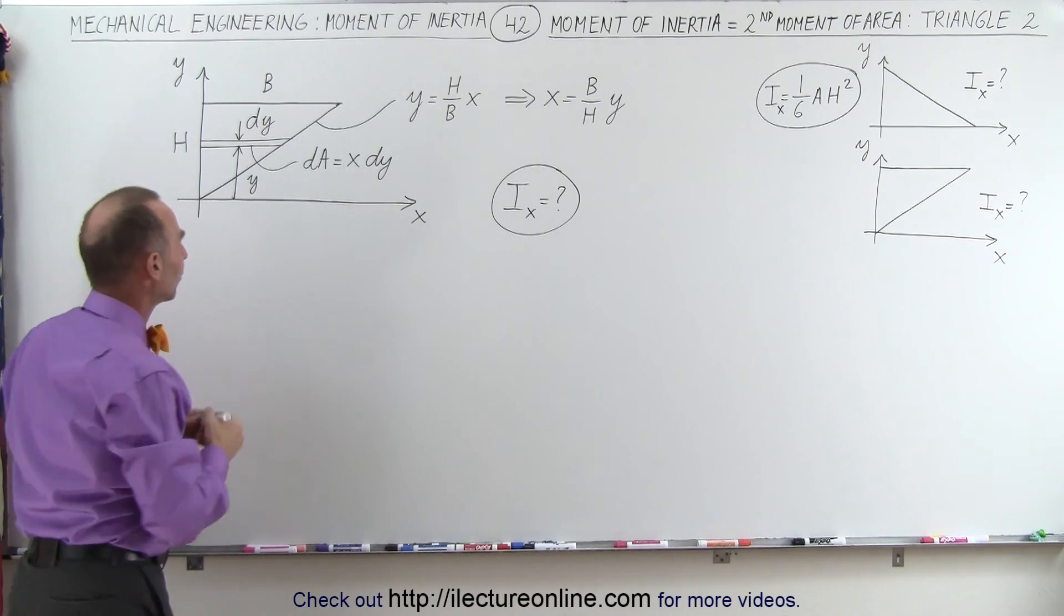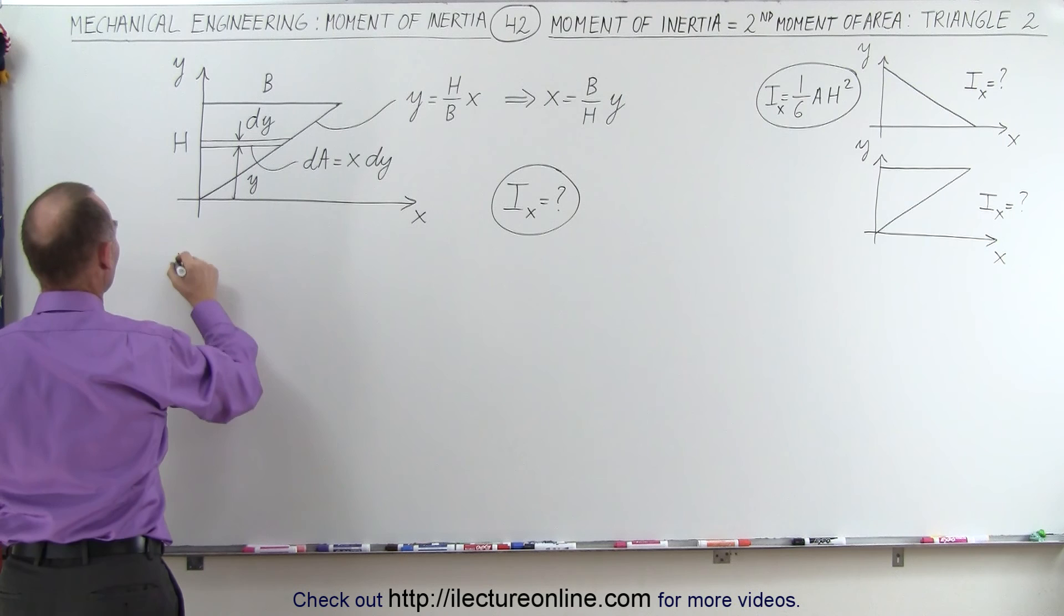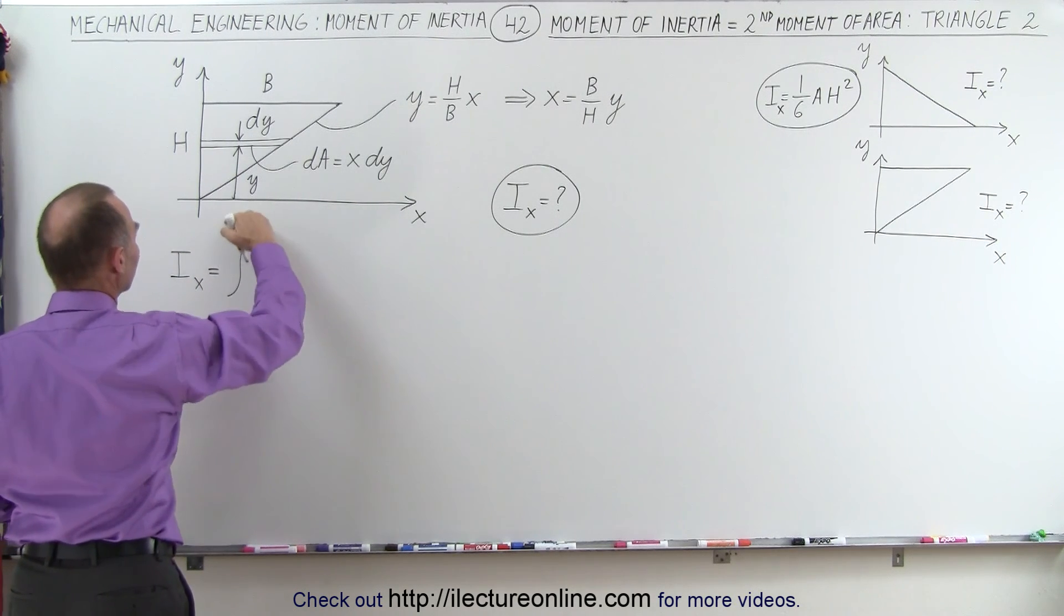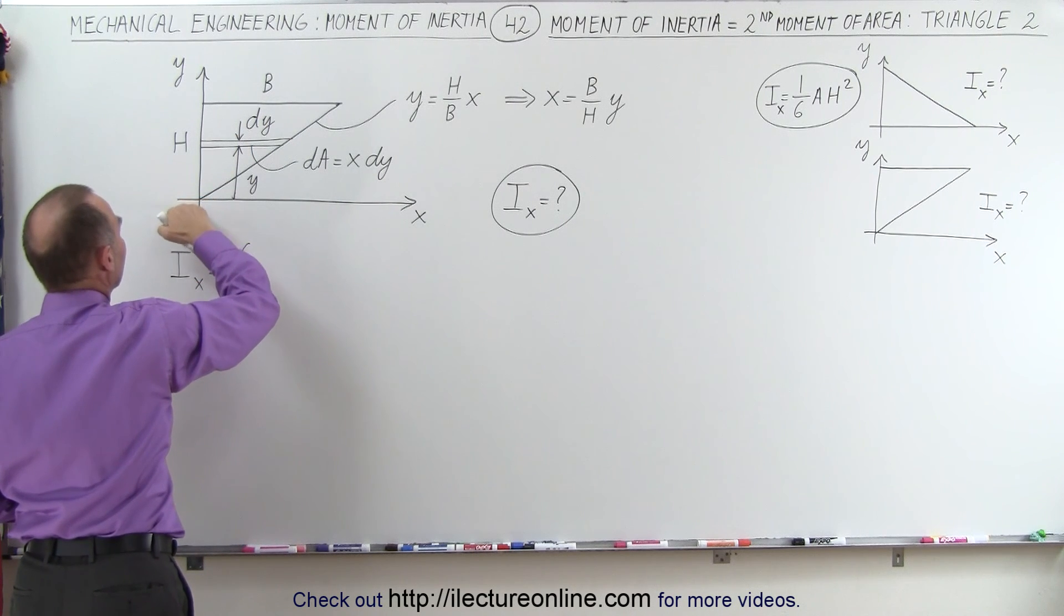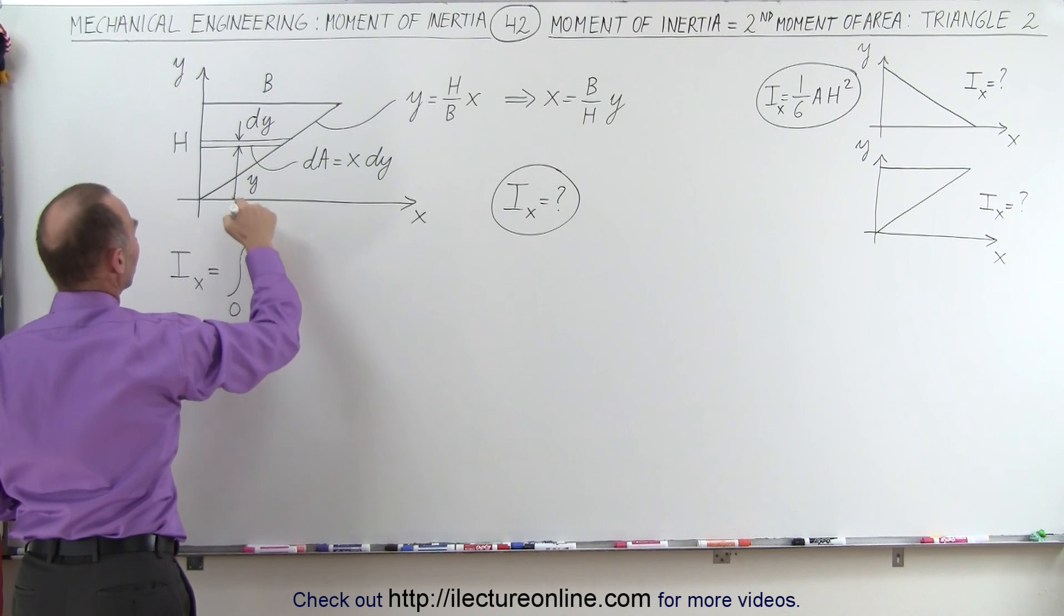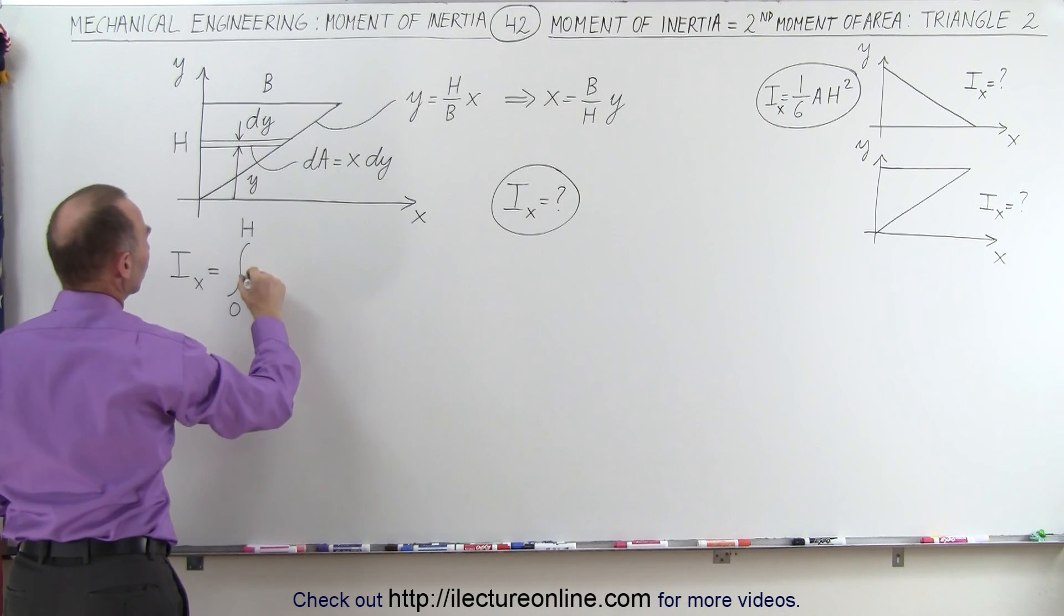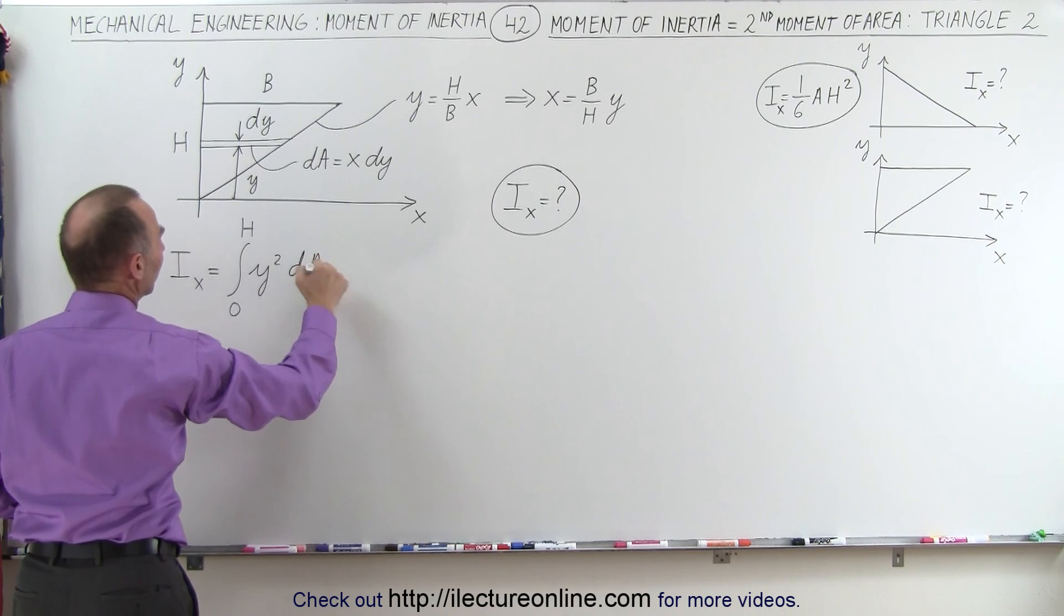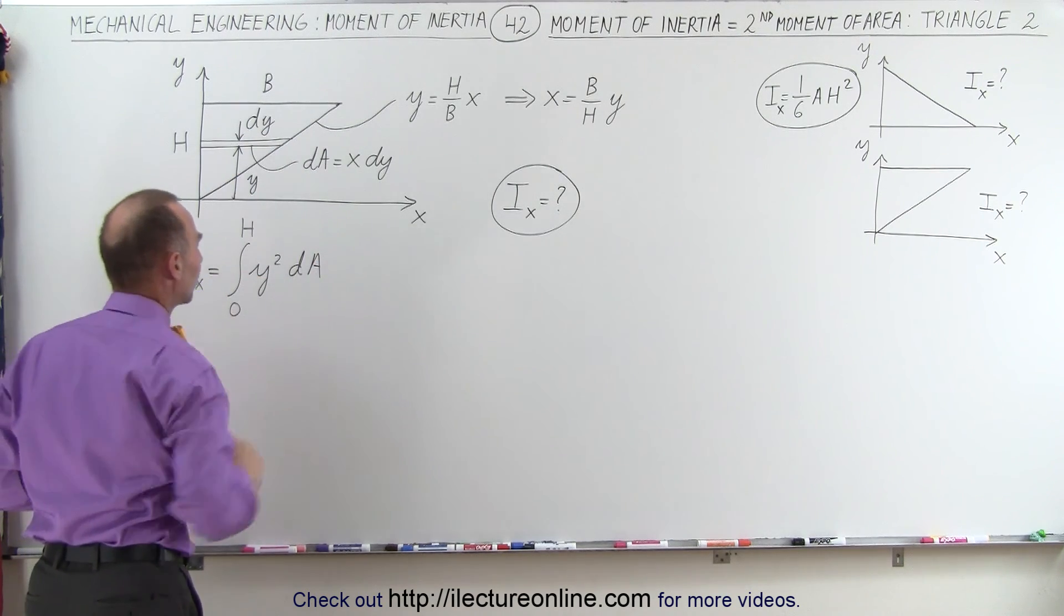So the moment of inertia of this triangle can be found as follows, and this is relative to the x-axis. It's equal to the integral. We're going to integrate all the little area elements from y equals 0 to y equals h. We're going to take the distance to the area element squared times the area element, and then integrate or sum up all the little area elements.